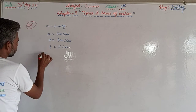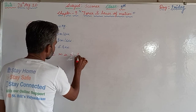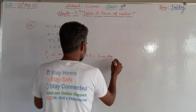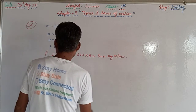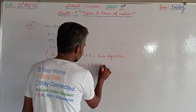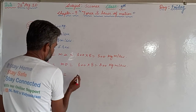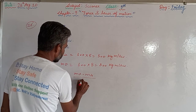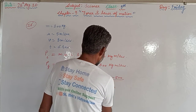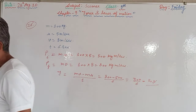Initial momentum p_i = m × u = 100 × 5 = 500 kg·m/s. Final momentum p_f = m × v = 100 × 8 = 800 kg·m/s. Force exerted = rate of change of momentum = (mv − mu) / t = (800 − 500) / 6 = 300 / 6 = 50 Newton. So 50 Newton is the answer to this numerical.